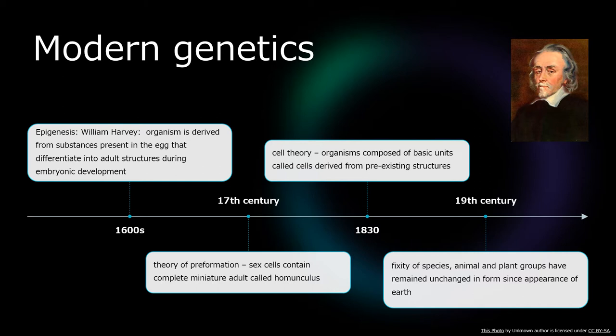There was also the theory of preformation, which held that the egg contains a small miniature human being who then develops. Today, we know that this is not true because as the human body develops in the womb, it is actually undergoing cell differentiation. In fact, all organisms undergo differentiation at the cellular stage — it is not a miniature organism which exists at the cellular level.